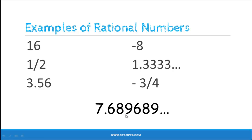Next, 7.689689... where the three digits 689 are repeating. So this is a number with repeating decimal expansion. Hence, this is also a rational number.